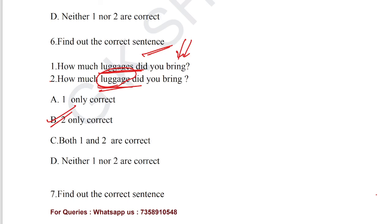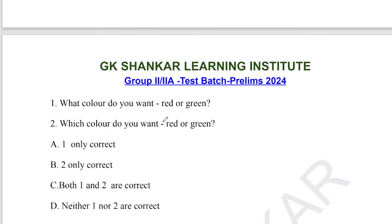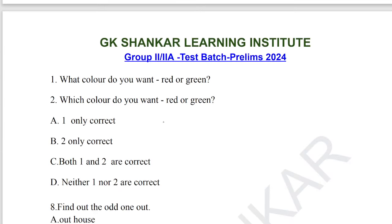Question number 7: find out the correct sentence from common usage. Statement 1: 'What color do you want? Red or green?' Statement 2: 'Which color do you want? Red or green?' We must use 'which' instead of 'what' when choosing from a defined set. The second statement is grammatically correct. Option B is the correct answer for question number 7.